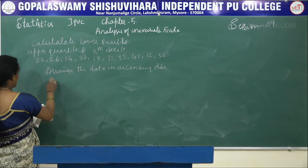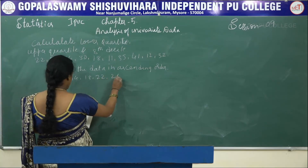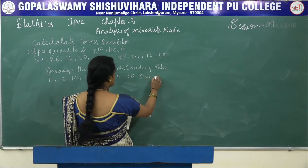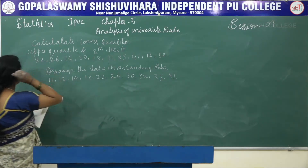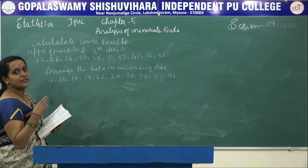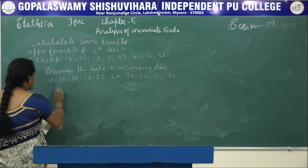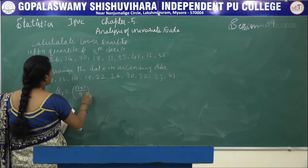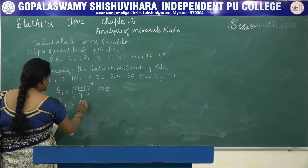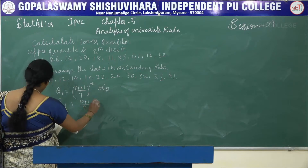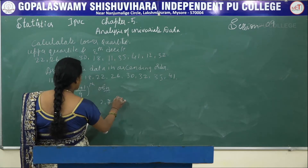Arranging the data in ascending order gives: 11, 12, 14, 18, 22, 26, 30, 32, 35, 41. After arranging the data, we have n = 10 observations.